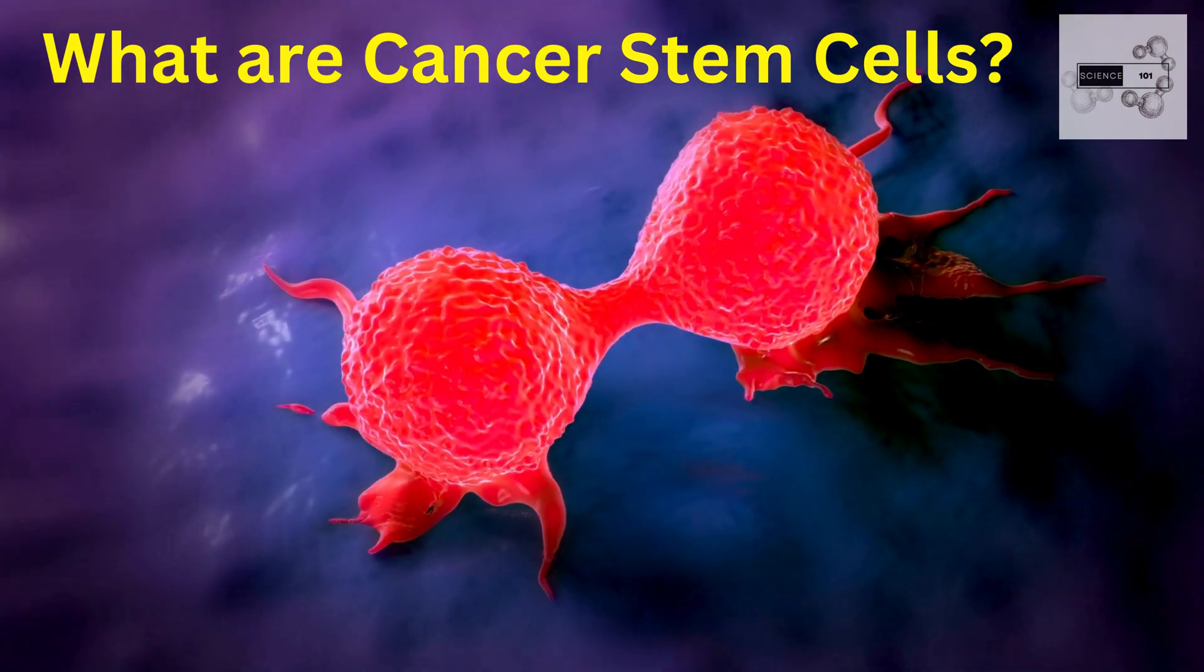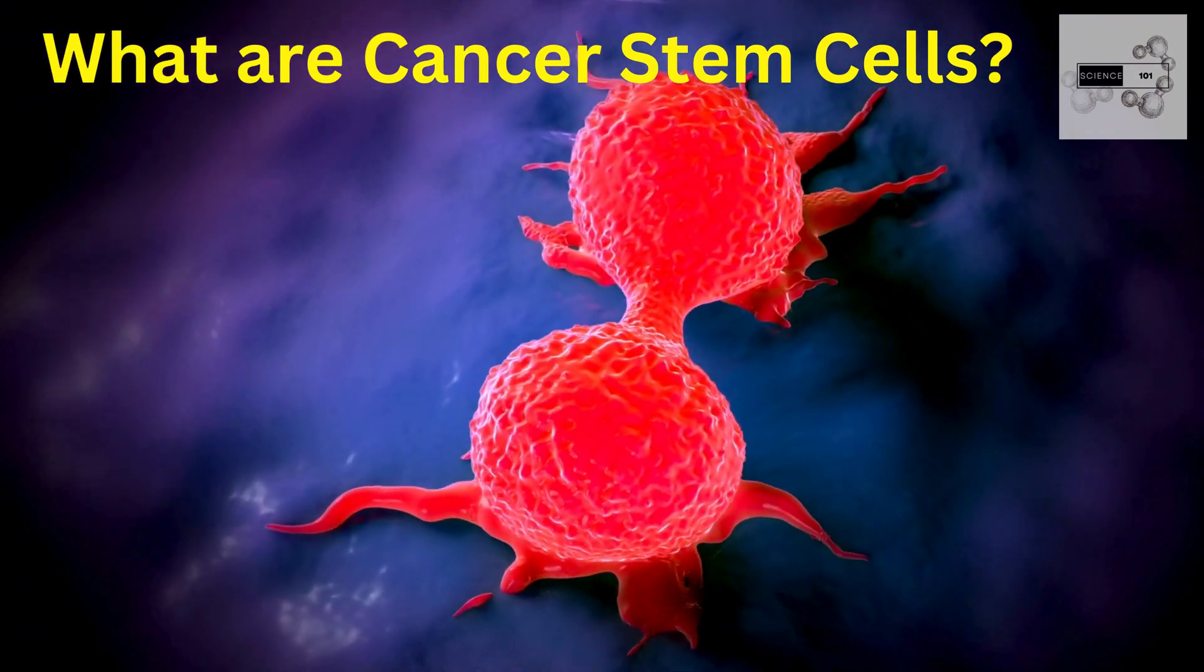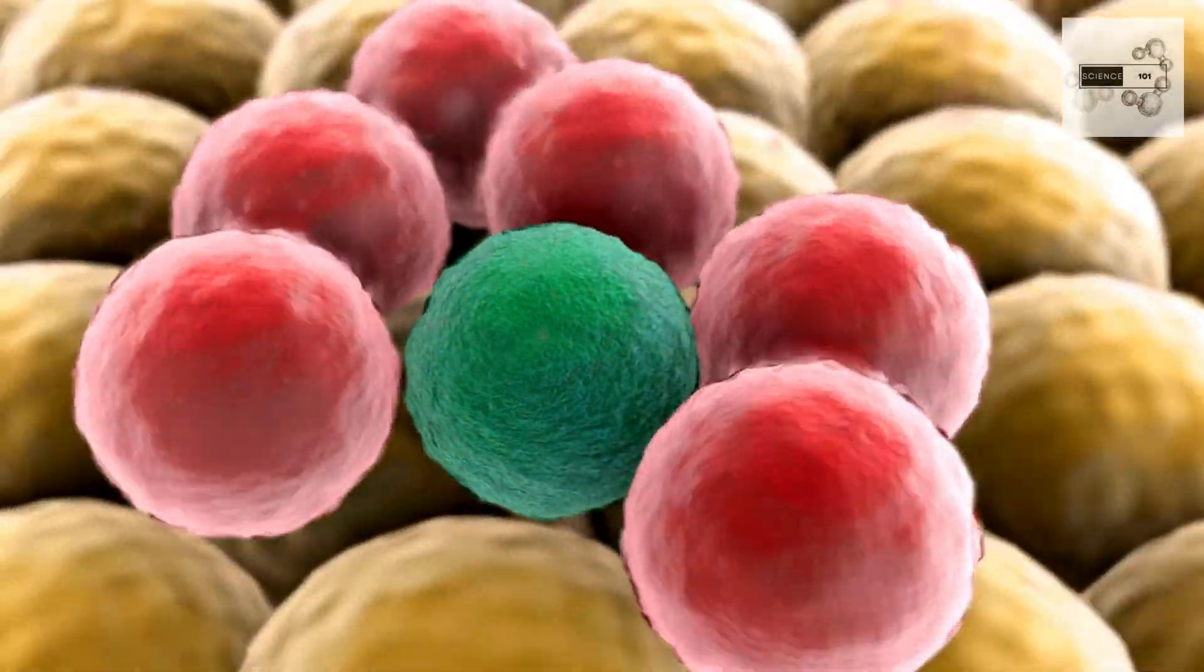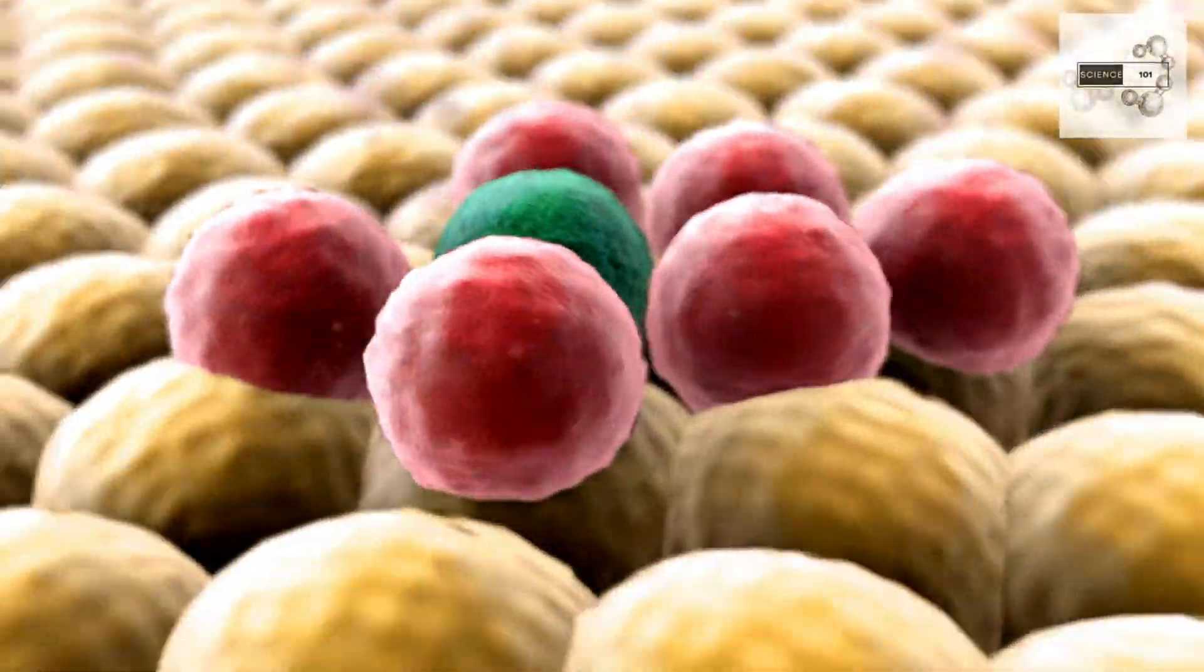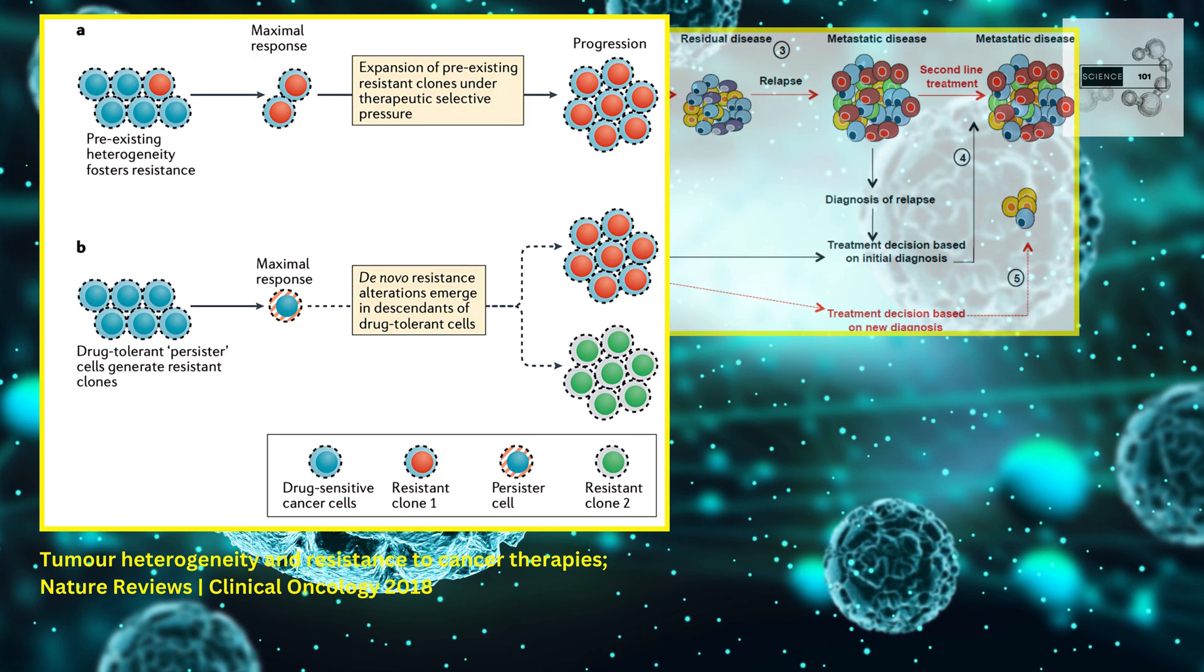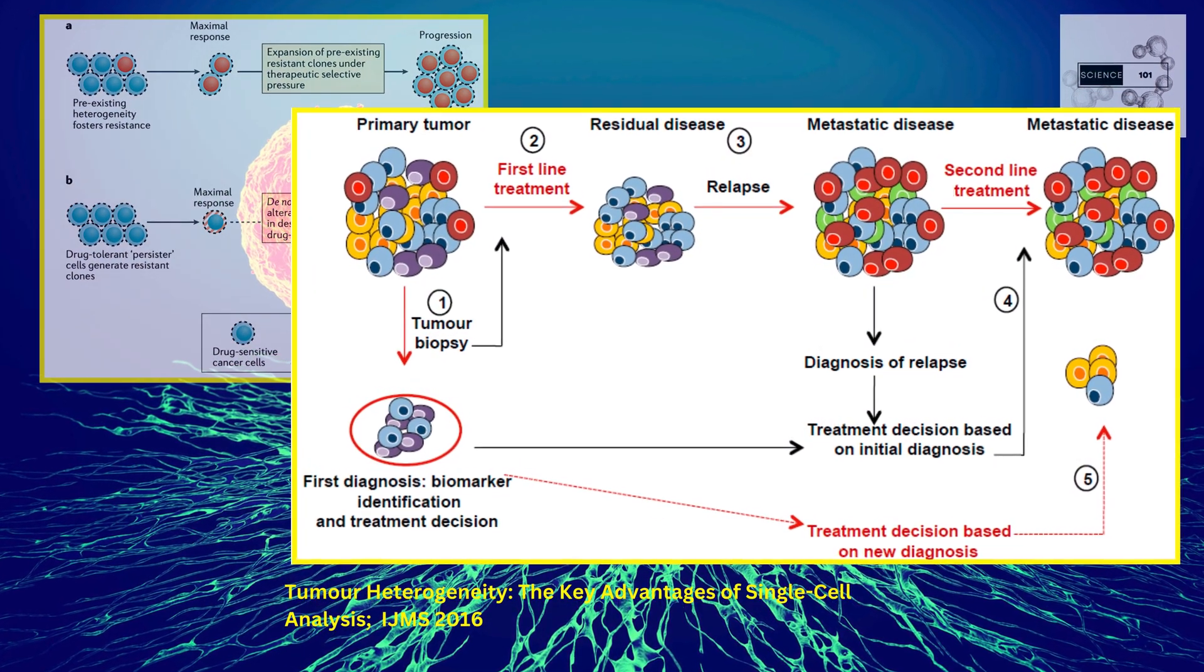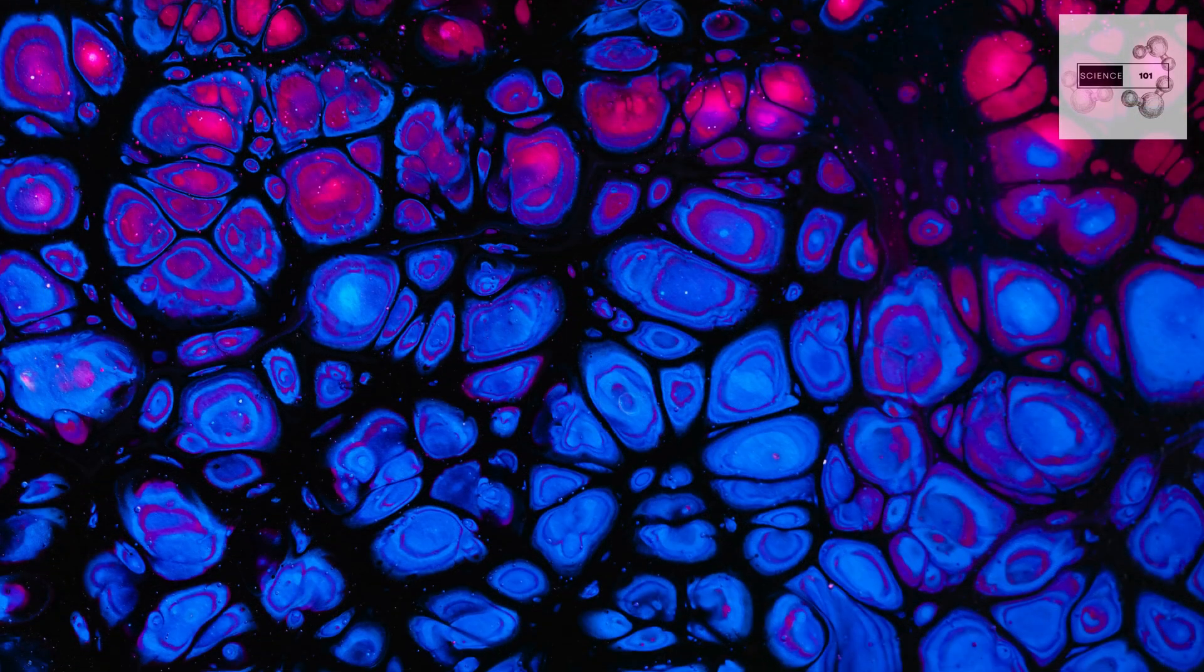Cancer stem cells. Like their healthy counterparts, cancer stem cells can self-renew and differentiate. However, their differentiation potential fuels tumor heterogeneity, creating a complex mix of cell types within the tumor mass.